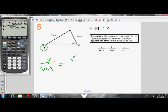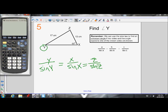So I know the length of Y over the sine of angle Y is equal to the length of X over the sine of angle X, which is equal to the length of Z over the sine of angle Z. And make sure you remember that side lengths get a lowercase letter and angles get an uppercase letter to help distinguish between the two.